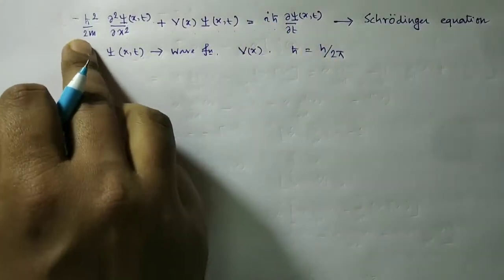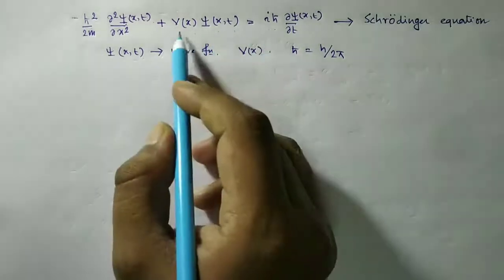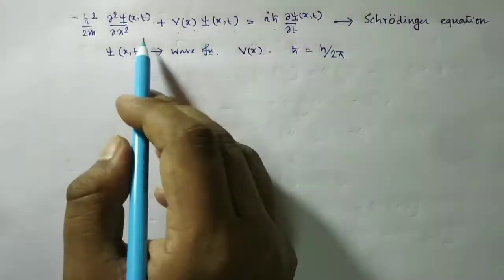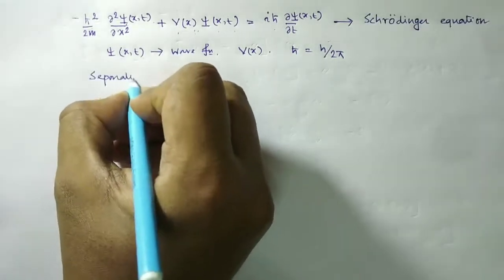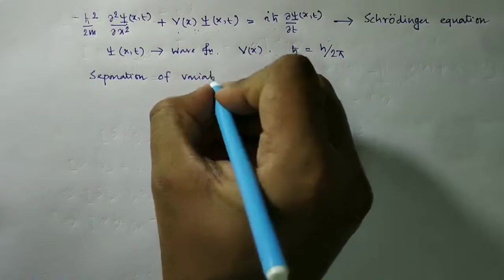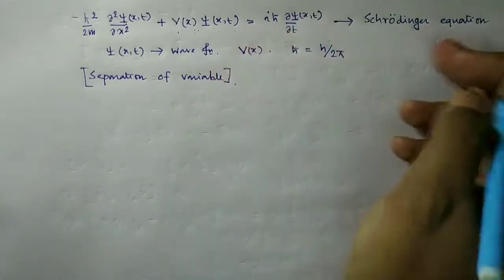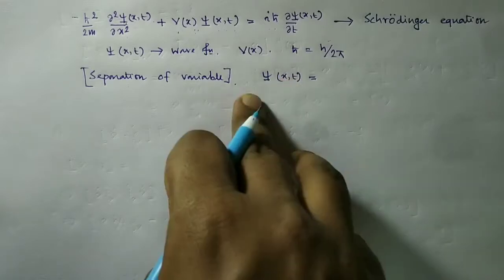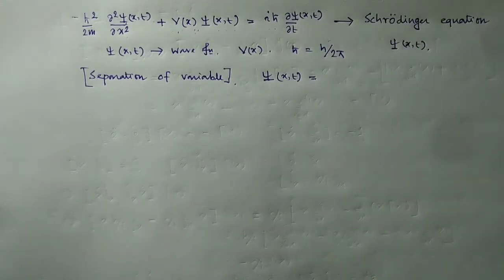This differential equation is to be solved to obtain the value of Ψ. We assume that V is only a function of the position coordinate — it is independent of time. Since this is a partial differential equation, we shall first use the method called the separation of variables technique. Ψ(x,t) is a function of both position and time; let us assume it is a simple product of two functions.